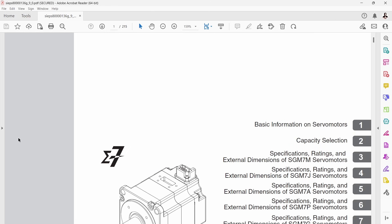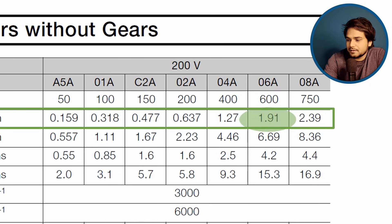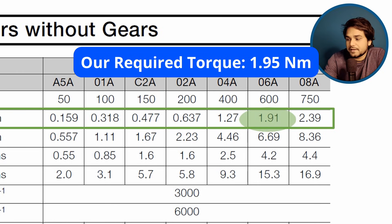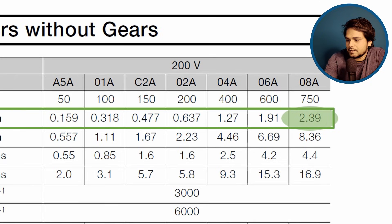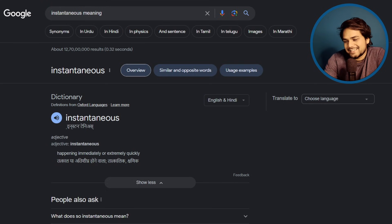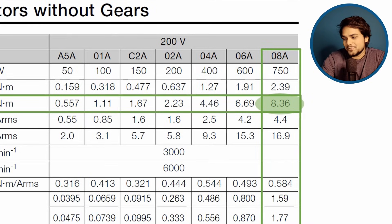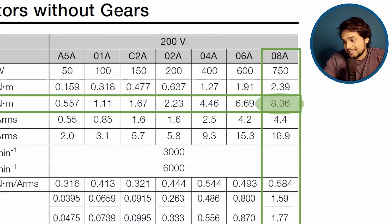Here I am referring to the catalog of servo motor from Yaskawa — you can refer to any manufacturer's catalog, it's up to you. In the rated torque row, 1.91 Nm is closest to our requirement, but we should definitely go for higher torque considering a safety factor. So let's select 2.39 Nm. For 2.39 Nm, the motor power is 750 Watt. The instantaneous maximum torque is 8.36 Nm, and this data is important when we make the selection of the coupling in the next part of this series.